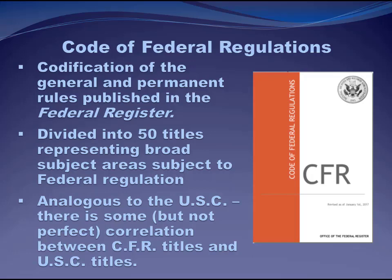The Code of Federal Regulations is a codification of the general and permanent rules published in the Federal Register, divided into 50 titles representing broad subject areas subject to federal regulation. Each title is further divided into chapters assigned to the relevant federal agencies. Each title is updated annually — in print, the revision date is on the front cover, and each year's cover is a different color. The process of compiling regulations into subject arrangement is called codification.